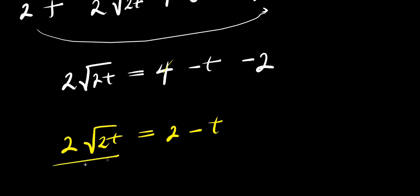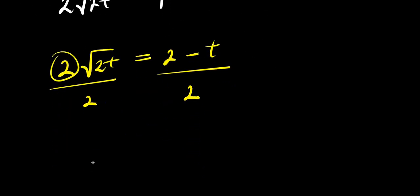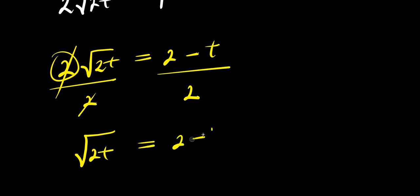So we can divide both sides by 2. The 2 eliminates, so we have square root of 2t equals 2 minus t divided by 2.